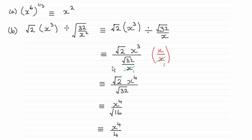I'll just take you through the methods, just in case there were any problems. For something like this, where you've got x to the 6 to the power of a third, what we do is multiply these two values together — 6 times a third, or a third of 6, which is 2. So you end up with x squared.